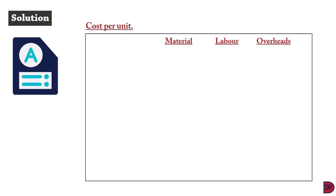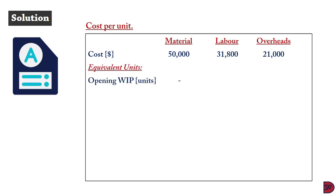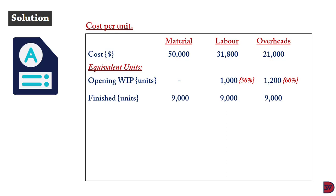The current period costs are: materials $50,000, labor $31,800, overheads $21,000. For equivalent units under FIFO: the opening WIP materials were fully processed last month, so nothing remains. Labor had 2,000 units at 50% completed previously, so 50% more work is needed — 1,000 equivalent units. Overheads were 40% complete, so 60% more work is needed — 1,200 equivalent units. Of the 10,000 inputs, 9,000 were fully completed. The remaining 1,000 closing WIP: materials 100% complete, labor 60% (600 units), overheads 30% (300 units).